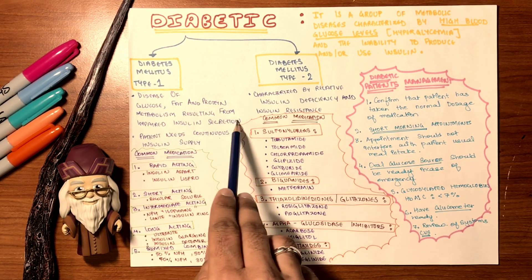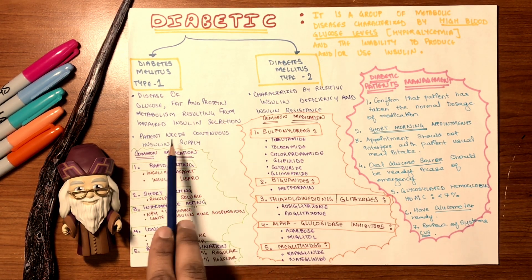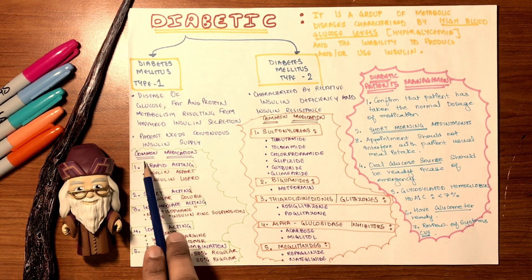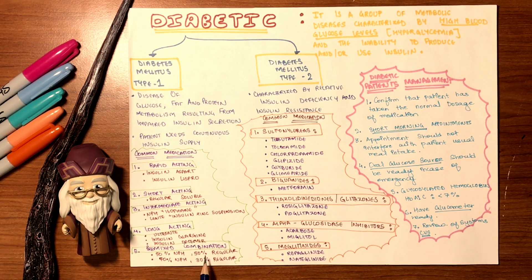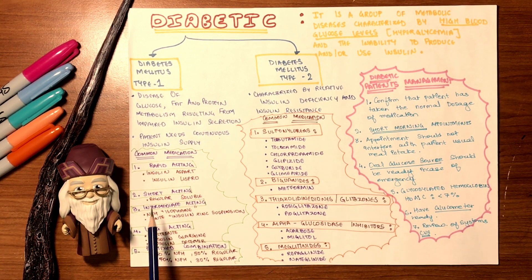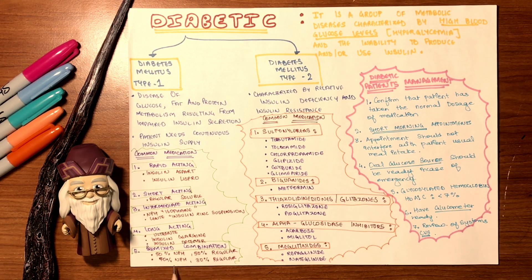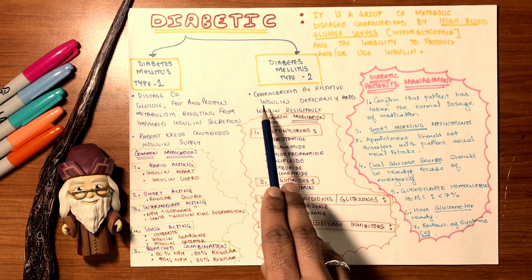In type 1, there is lack of insulin secretion from the pancreatic beta islet cells, so the patient needs continuous insulin supply — this is the type requiring injections. Common medications include rapid-acting, short-acting, intermediate-acting, long-acting, and premixed combinations. For example: rapid-acting contains insulin aspart; short-acting has regular soluble insulin; intermediate-acting has isophane; long-acting has insulin glargine; and premixed combinations blend the groups for better effect.